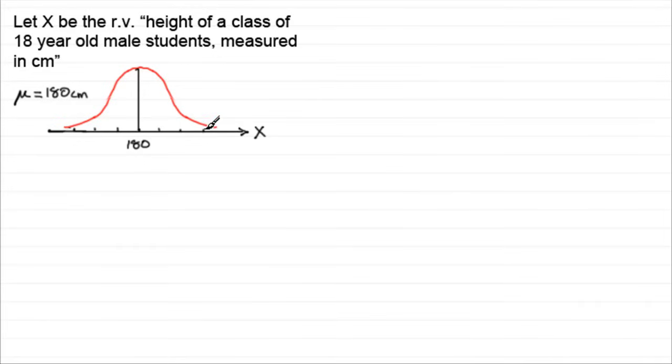Now, normal distributions can vary in their shape. Take, for instance, something like this, the volume V. Let V be the random variable volume in milliliters of a particular can of drink.